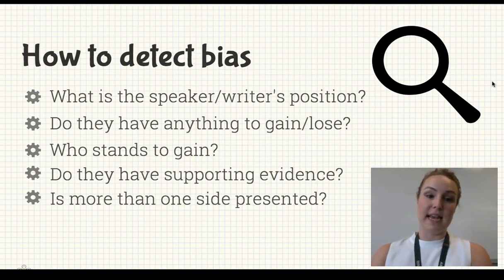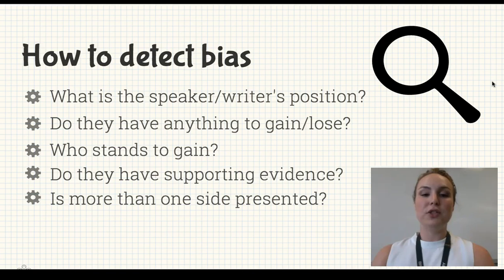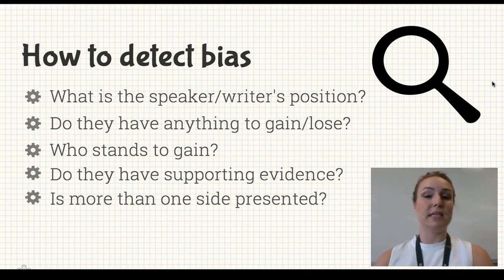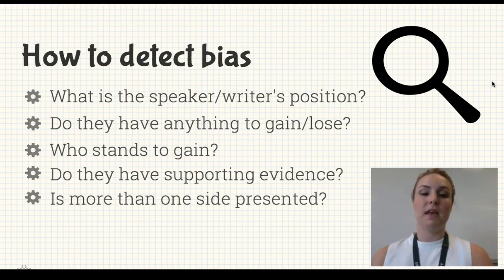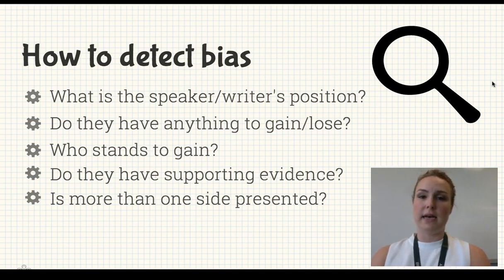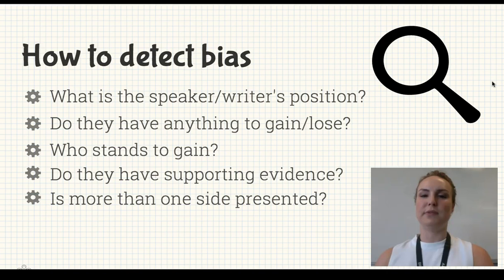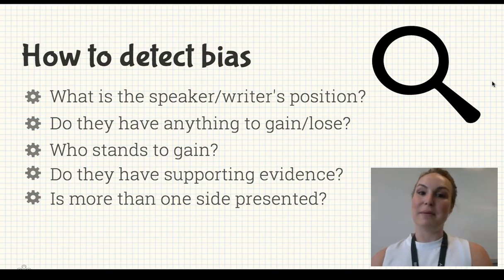Here are some tricks to detect bias. Always try to think about the person who is writing or producing your particular source. Do they have something to gain? Do they have something to lose? What have they invested their money in? What is their particular job? For example, if you're talking about injury prevention and you read an article by a physiotherapist who says you have to go see a physio whenever you get an injury — well, of course they stand to gain; they're going to get more business.